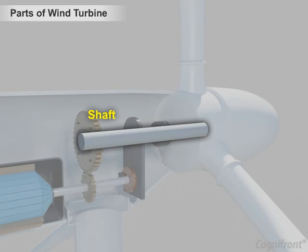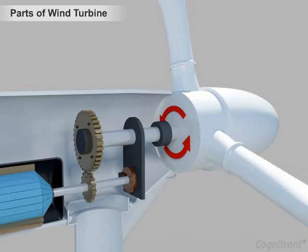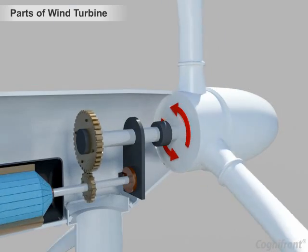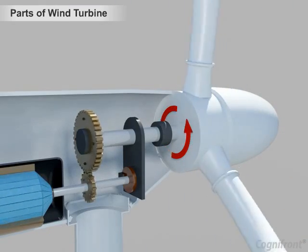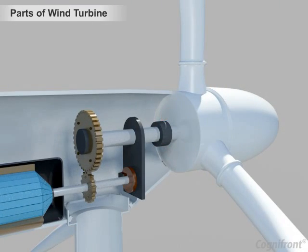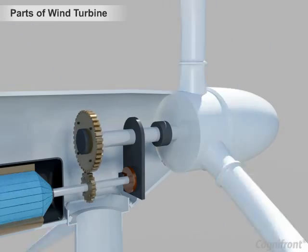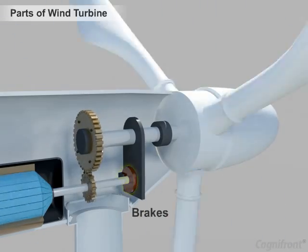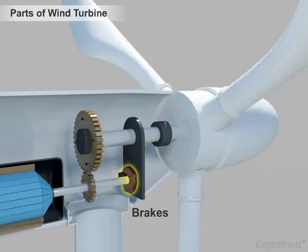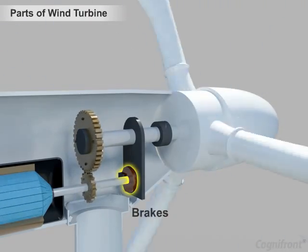Next is the shaft. The hub is mounted on the main shaft. The rotation of the blade causes the shaft to rotate. If the wind blows very fast, then brakes can be applied to control the speed of the blades and shaft.